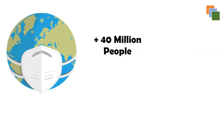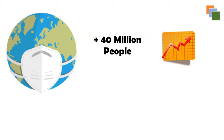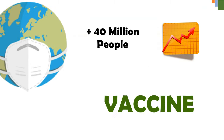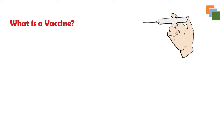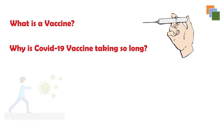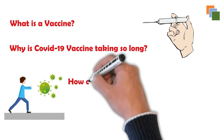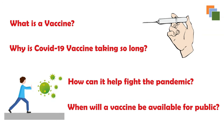The pandemic has now affected over 40 million people across the world and the cases are still on the rise. There seems to be no end to this spread, and all the people in this world are looking for that one thing that could help prevent this spread — and that thing is a vaccine. So what is this vaccine, why is it taking so long, how can it help fight the pandemic, and when will it be available for public use?